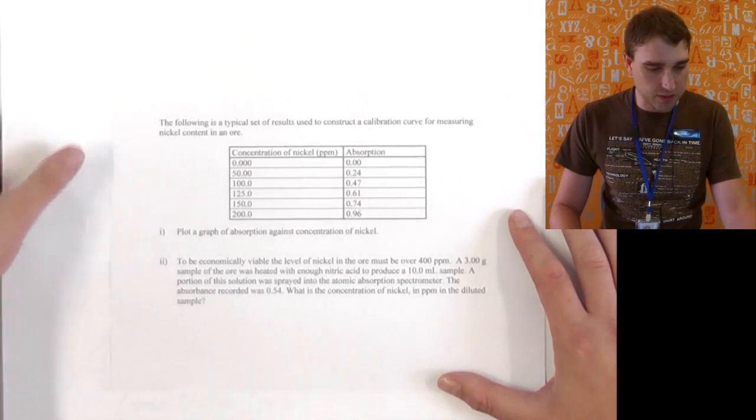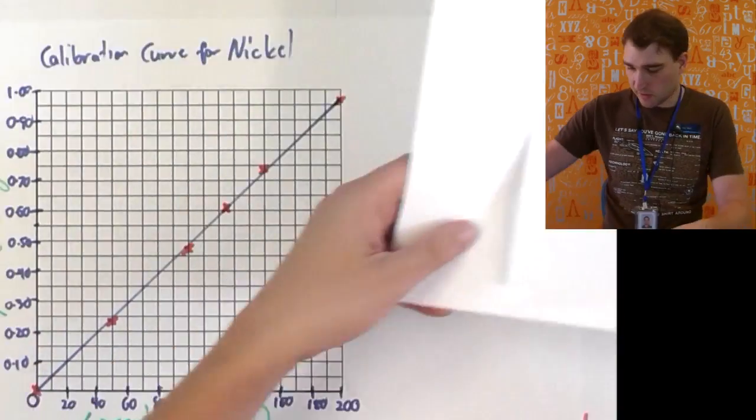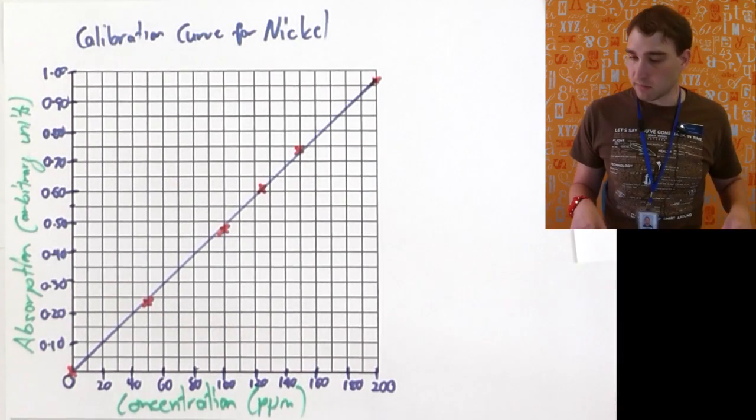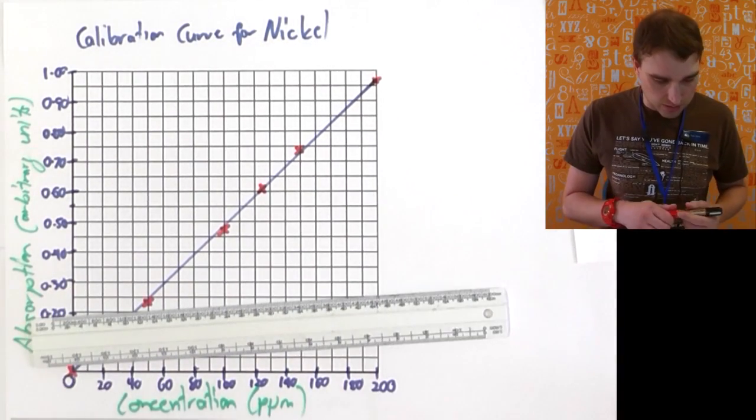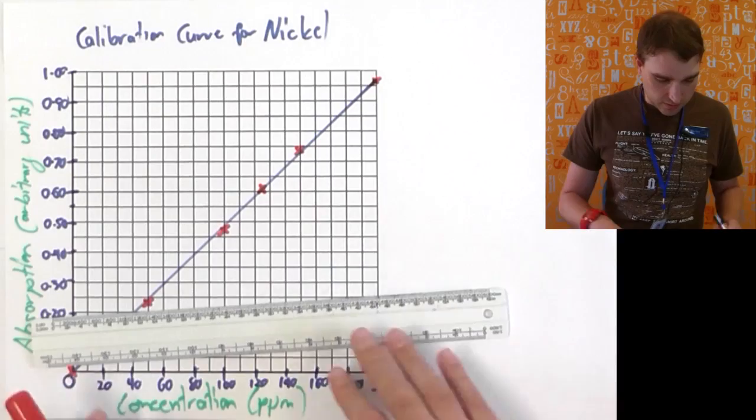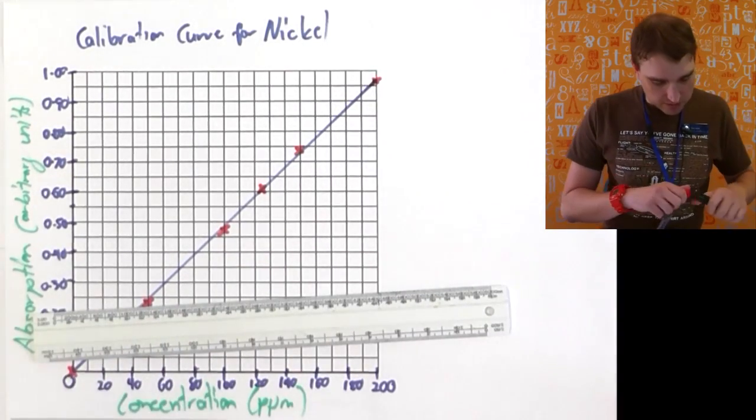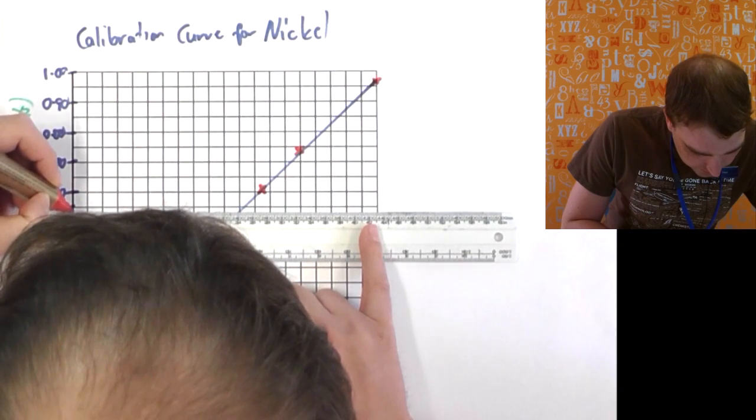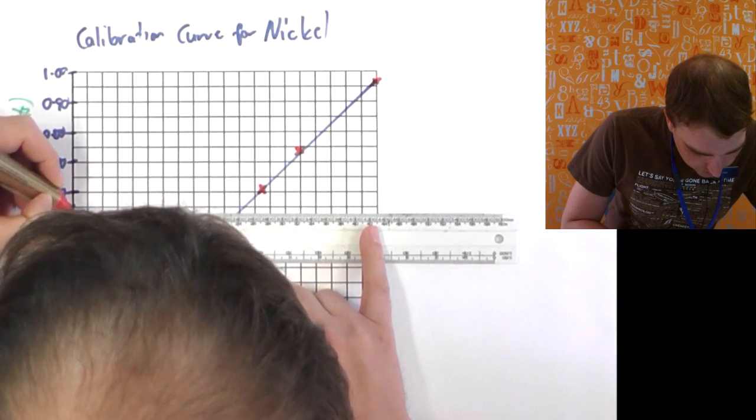So, now we're going to go into our graph, we're going to find the absorbance of 0.54, and we're going to use that to figure out what the concentration of that unknown solution of nickel is going to be. So, we're looking for 0.54. So, if I look on my scale over here, so here's 0.55, so 0.54 is just going to be below. So, that's my absorbance.